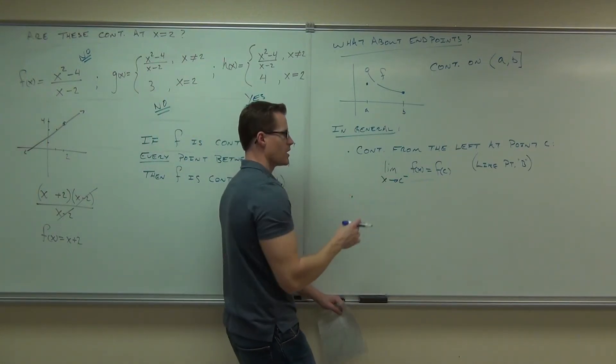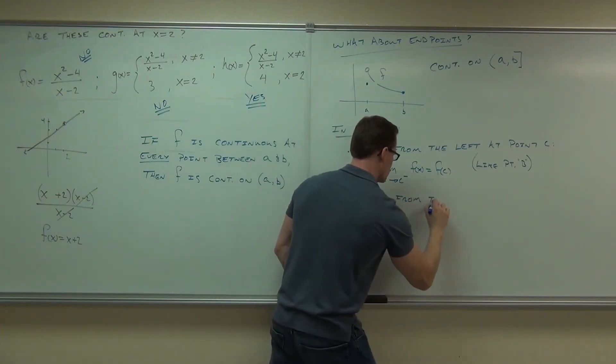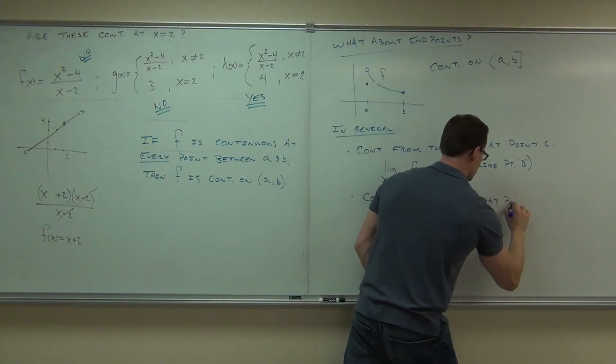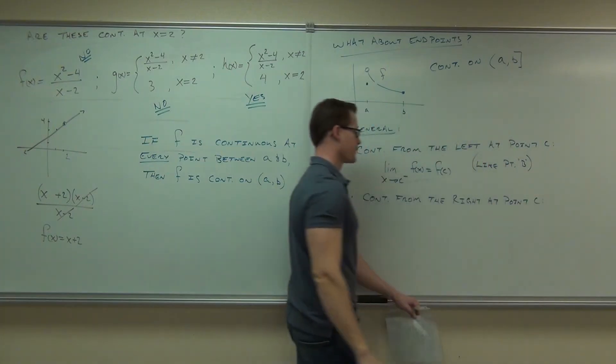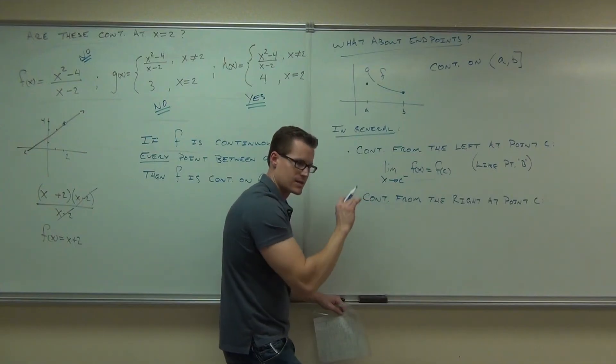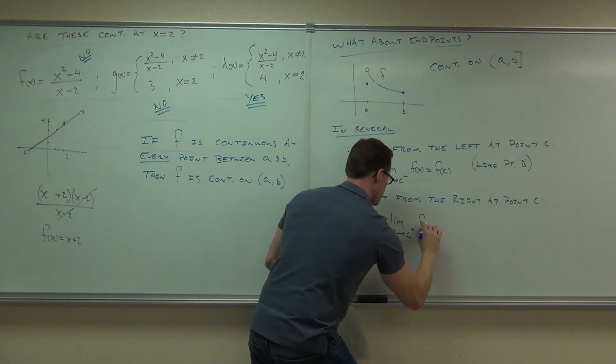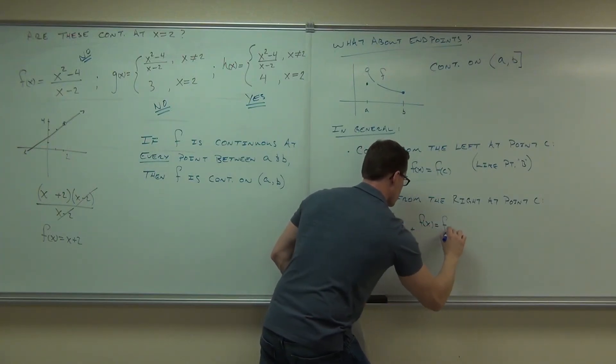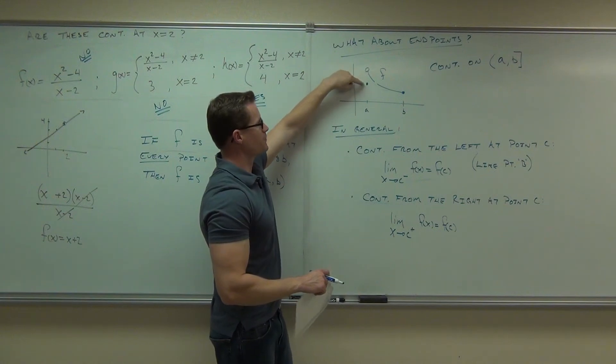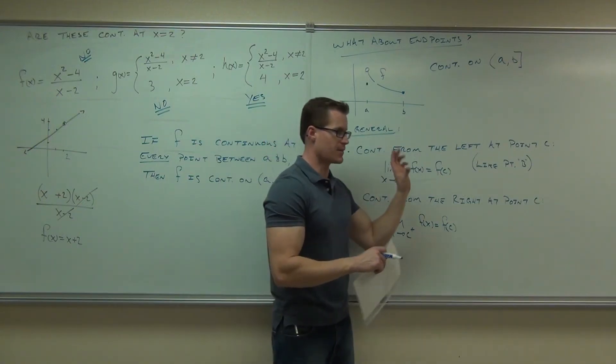For being continuous to the other endpoint from the right at point c, well, it's just the opposite limit. You have to have the limit from the right-hand side, the function has to be defined at that point, and it's got to be the same. This is like f of a. The limit has to exist. It does. The point has to be defined. It is, but they would have to be identical. So, this is like the point a situation. In our case, it's not continuous at the point a.